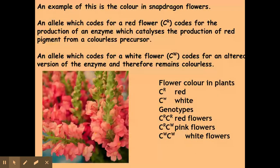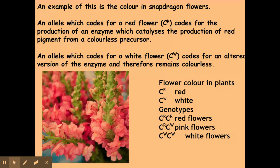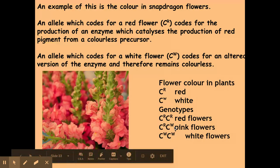The first example I'm going to go through is the colour of snapdragon flowers. Here we have two alleles: CR and CW. CR codes for a red coloured pigment if you have two of these, and if you have two CWs you get a white flower. If you have a mix of CR and CW, both colours are expressed at the same time — so in co-dominance, neither is dominant nor recessive. Both are expressed in a heterozygous individual, resulting in pink flowers.